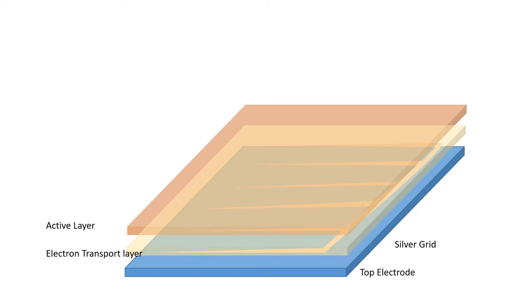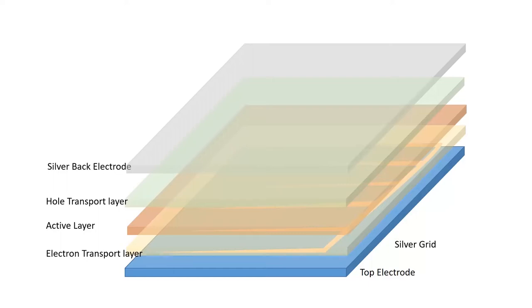After that you would need to put down another transport layer, either a hole or electron, whatever transport layer was not placed down beforehand, and that would be finally topped with a back electrode of silver to allow for maximum extraction of your cell without any concerns about blocking the light that's needed with the silver grid or transparent conductor on the front electrode.